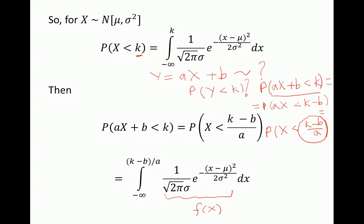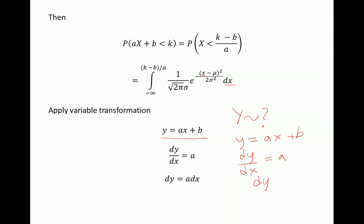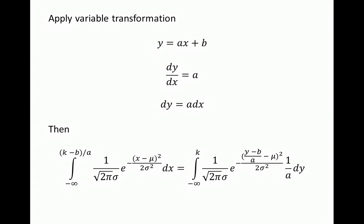Now we just have to compute this integral by applying a variable transformation. Let's set Y equal to aX plus B, because we are interested in the distribution of Y. We will transform the variable X inside our integral and express it in terms of Y. We need to express X in terms of Y and also find DX. If Y equals a times X plus B, then DY over DX equals a, and therefore DY equals a times DX.